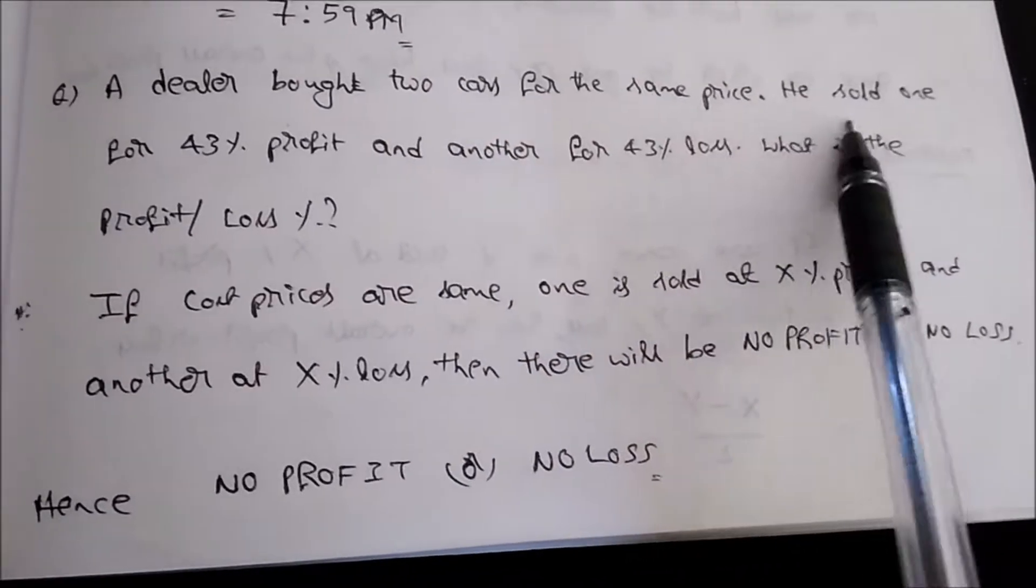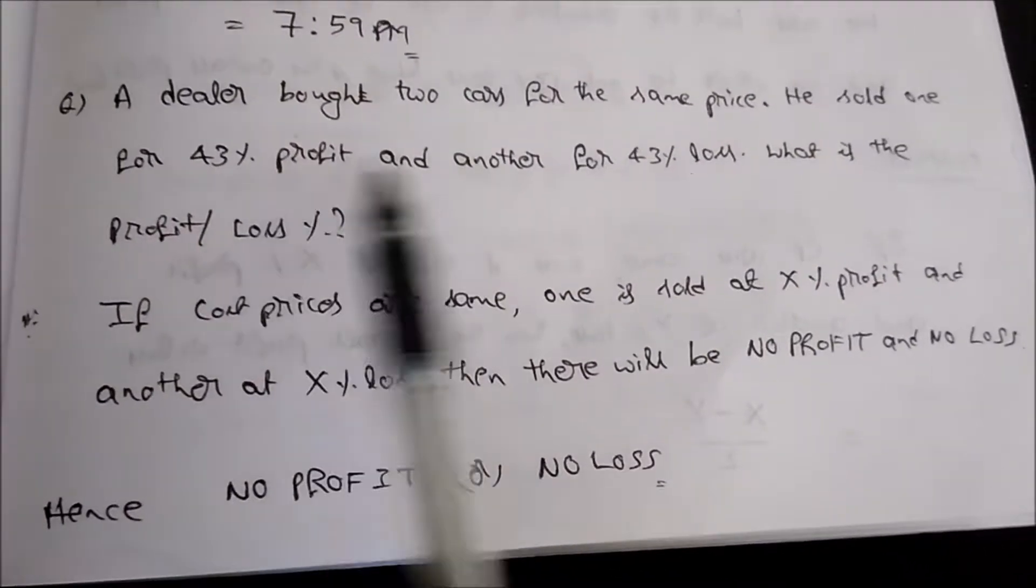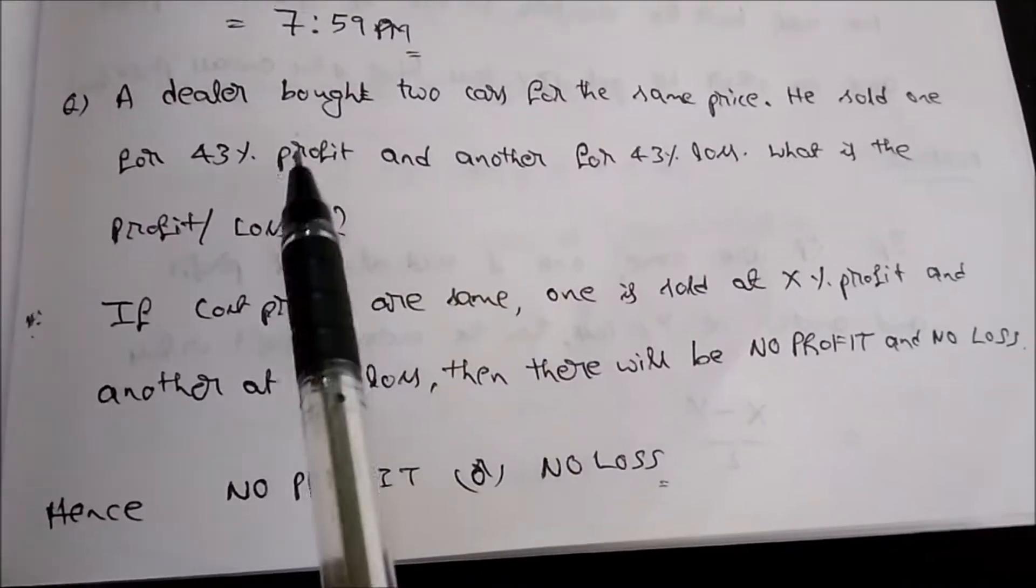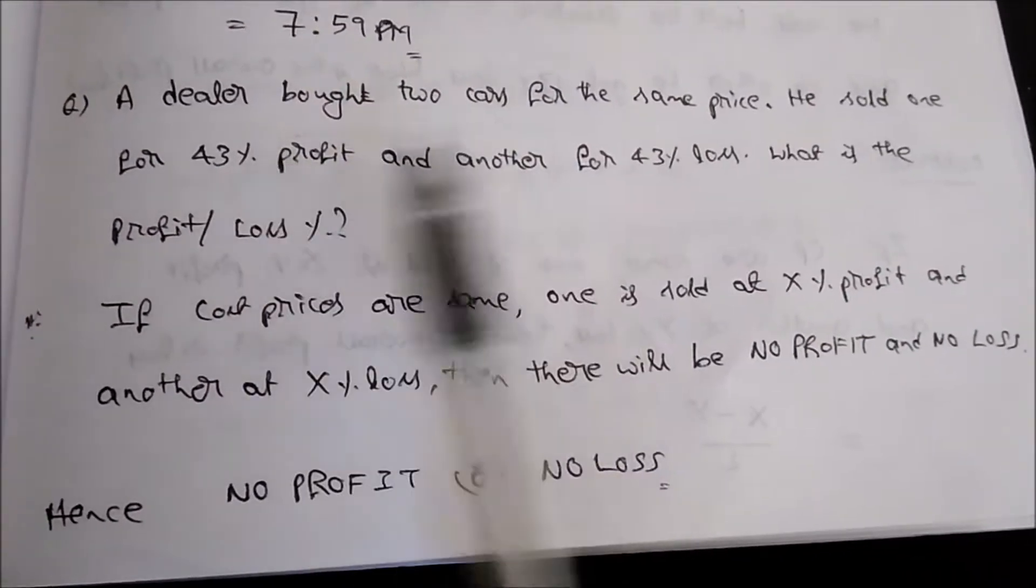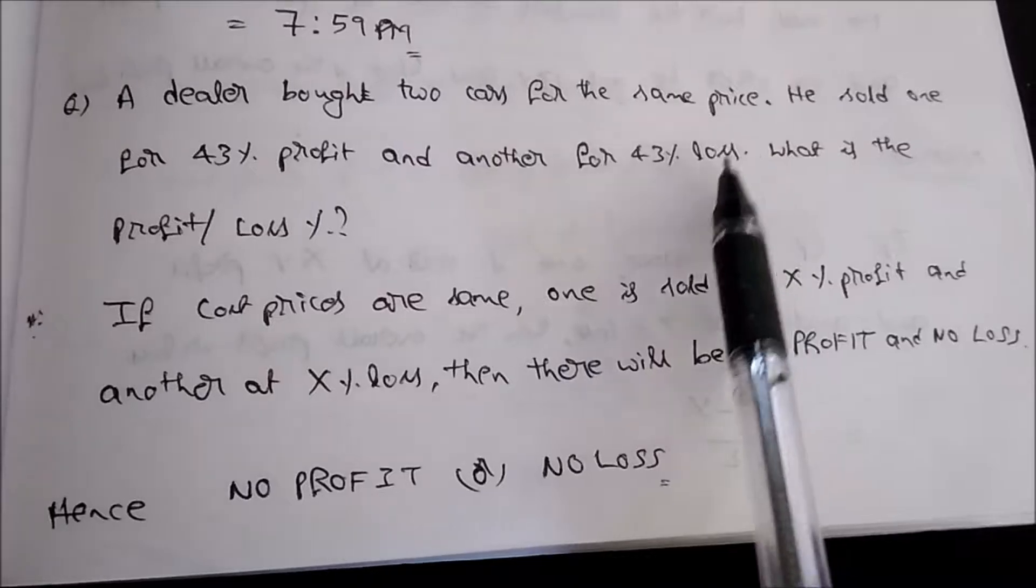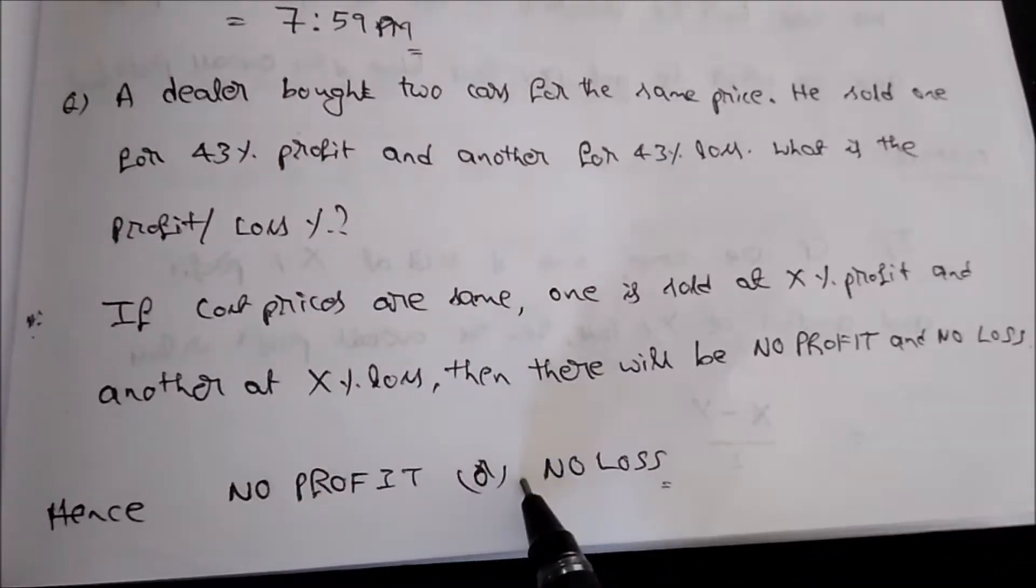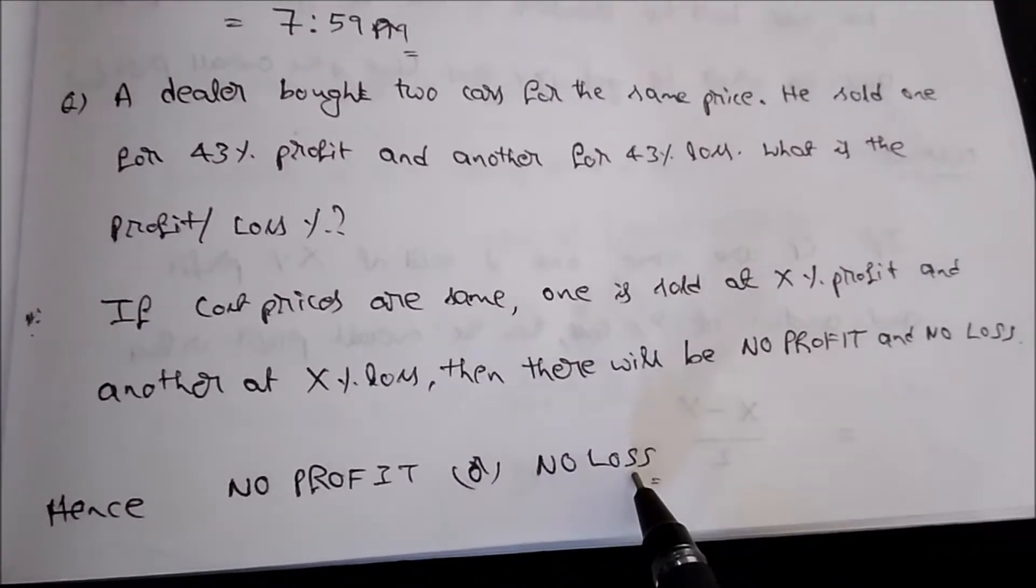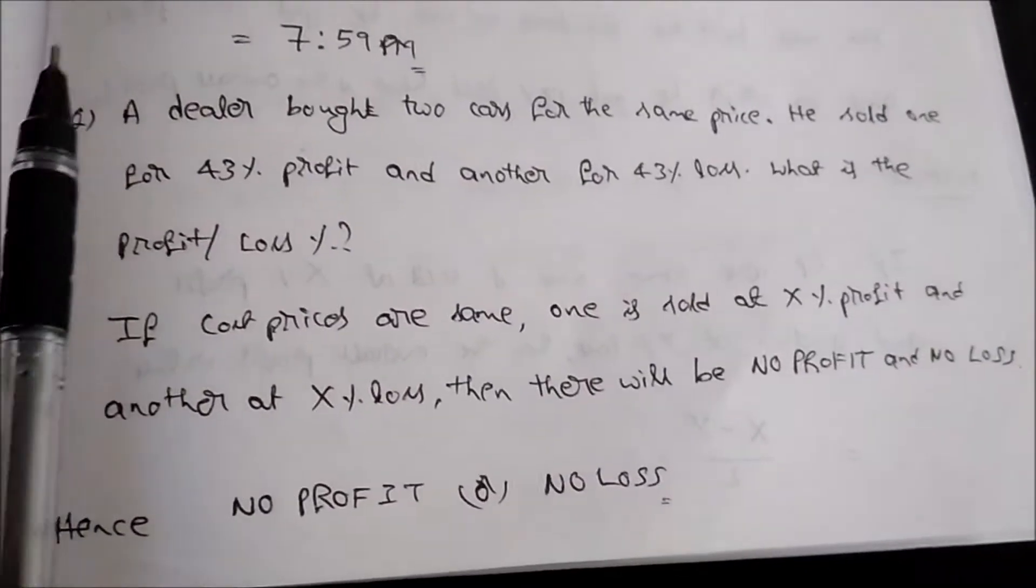They sold at 43% profit and 43% loss. 43, 43, both are same. One is at profit, one is at loss. So finally there will be no profit, no loss. This is the answer for this.